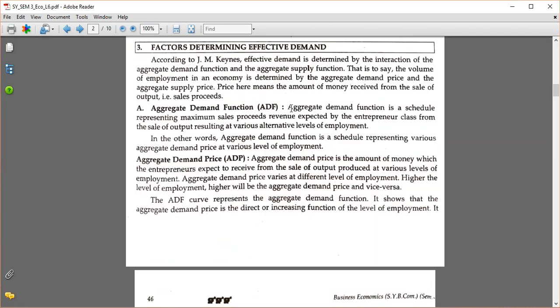This is the effective demand determination, which factors are the aggregate demand function. This aggregate demand function represents maximum sale proceeds or revenue expected by the entrepreneurial class from the sale of output resulting at various alternative levels of employment. So according to J.M. Keynes, effective demand is determined by the interaction of the aggregate demand function and aggregate supply function. That is to say, the volume of employment in the economy is determined by aggregate demand price and aggregate supply price.